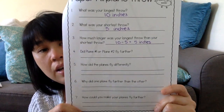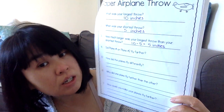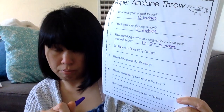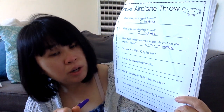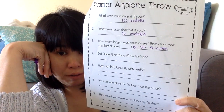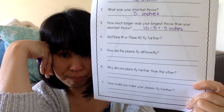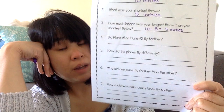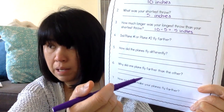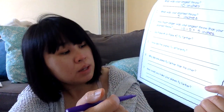Number five: how did the planes fly differently? If you notice that plane one flew farther, you can write that. Maybe you noticed that plane two was kind of wobbly when it was flying — you can write about that. Maybe one went up really high — you can write about that. You're just describing how they flew differently. Number six: why did one plane fly farther than the other? There is no right or wrong answer here, but I want you to put a guess. Maybe it had a longer nose, or wider wings, or maybe it was skinnier — those are all good guesses.